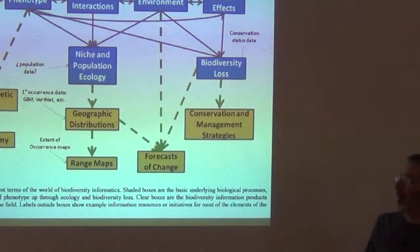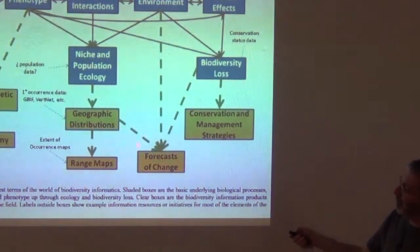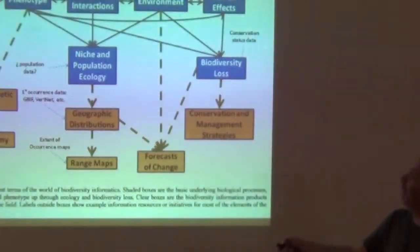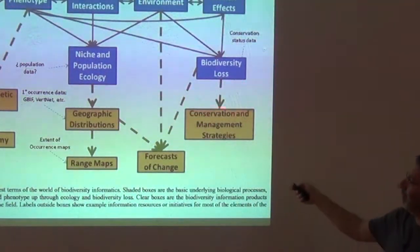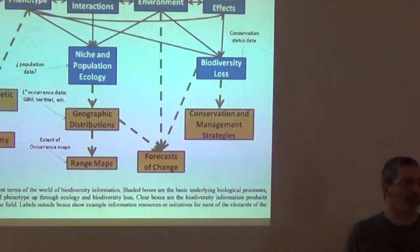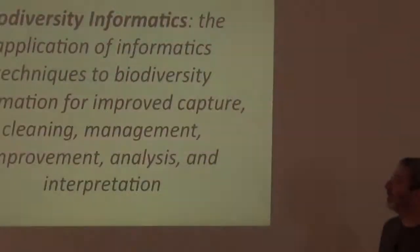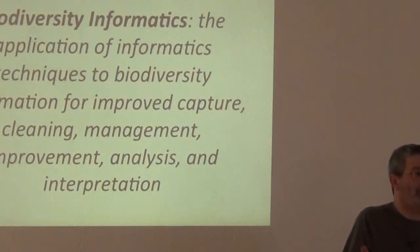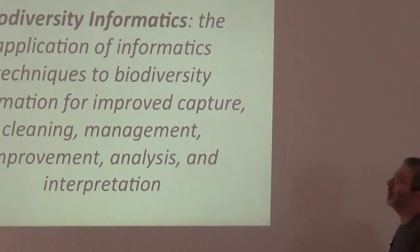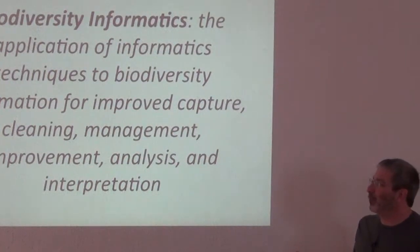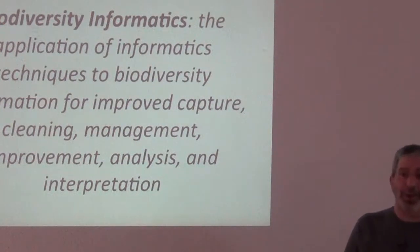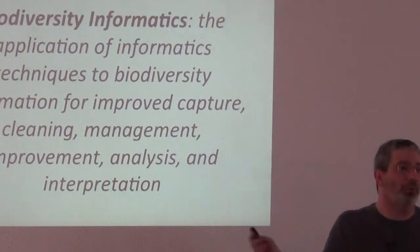A conservation prioritization might link geographic distributions of species and taxonomy to foci of biodiversity loss. If you can link those three, you can get to a very effective conservation and management strategy. But that's not easy — linking these worlds of information is hard. That was all an introduction to biodiversity informatics. We can call this field the application of informatics techniques to biodiversity information for improved capture, cleaning, management, improvement, analysis, and interpretation — a very broad definition, but it helps us think about the whole breadth of this challenge.